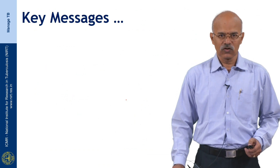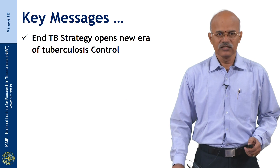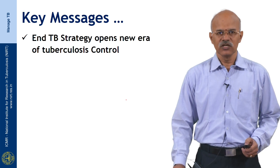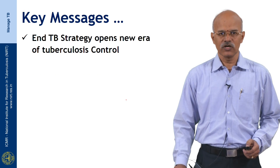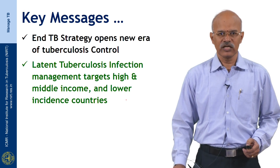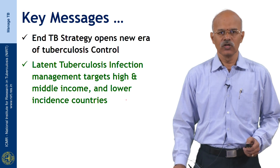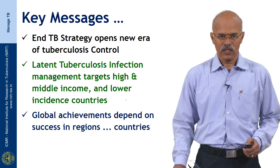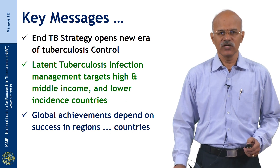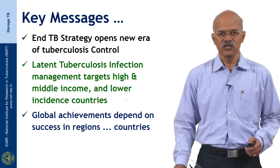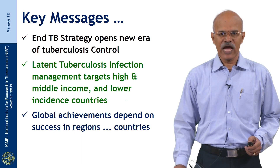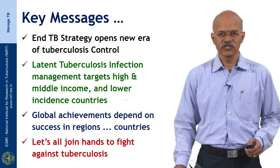The key messages for the global TB control strategies are that the End TB Strategy opens a new era of tuberculosis control. It concentrates on latent TB infection management targeting high and middle income countries and lower incidence countries. Global achievements depend not only on entire regions but on the success of implementation in individual countries. Let us all join hands to fight against tuberculosis. Thank you.